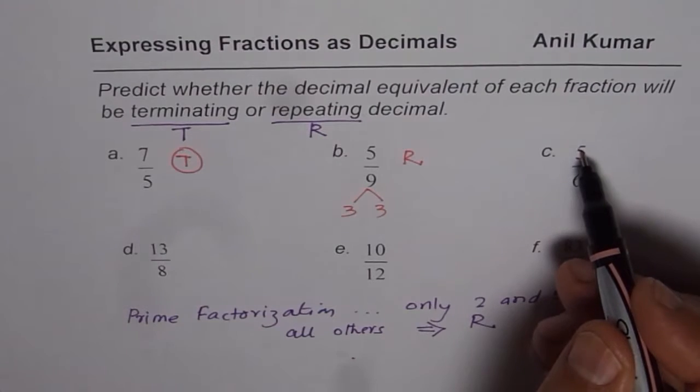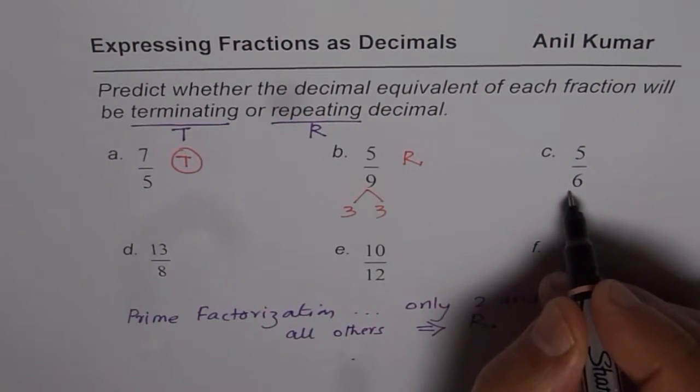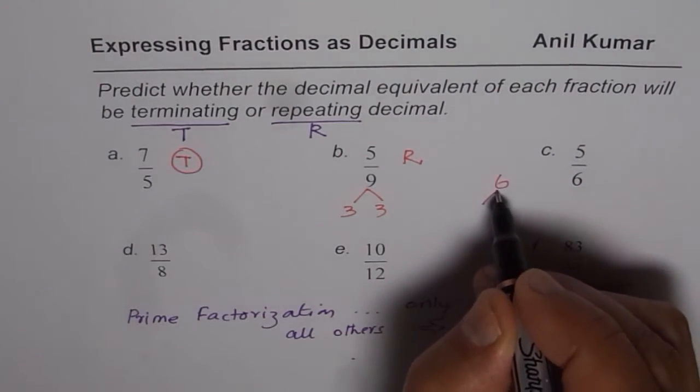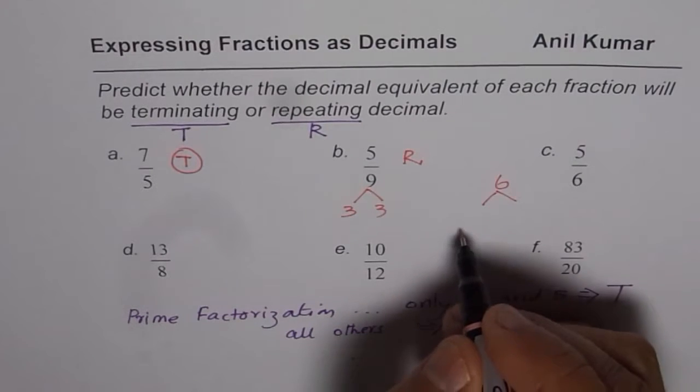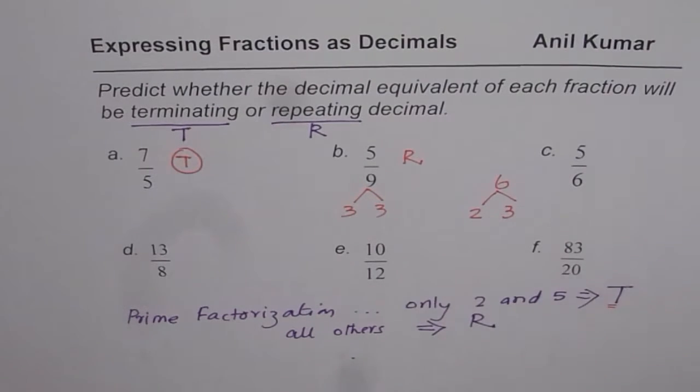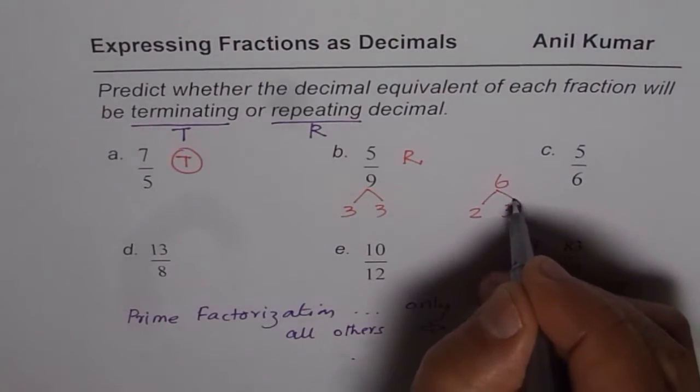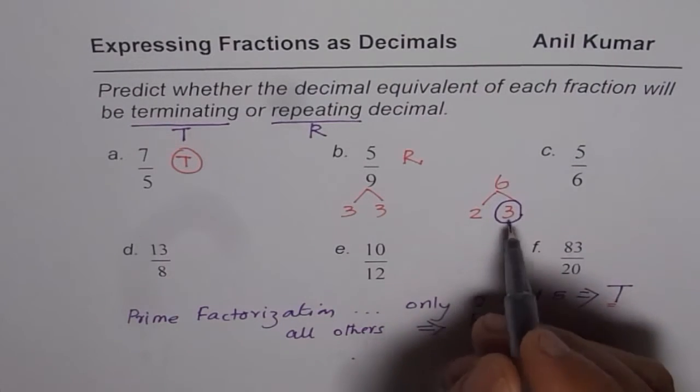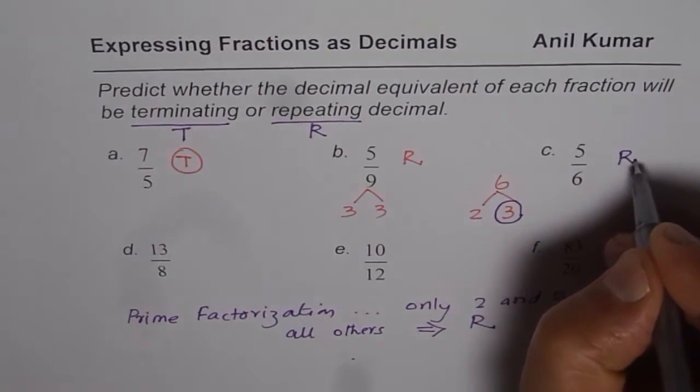Then we have 5 divided by 6. Now, what are the factors of 6? Factors of 6 are 2 and 3. Since it has 3 also as a factor, it will make it repeating. So this will be repeating decimal.